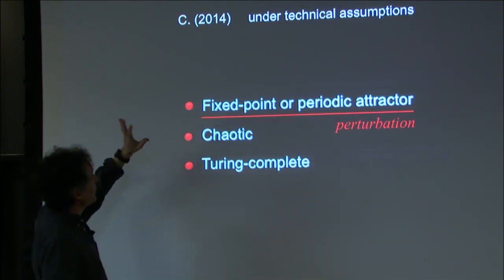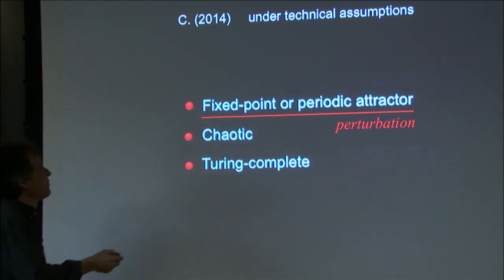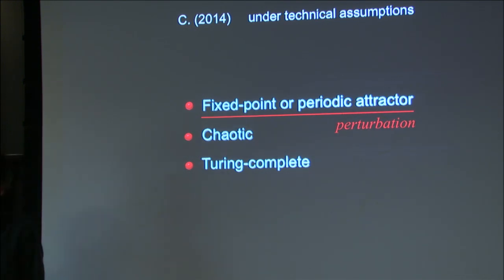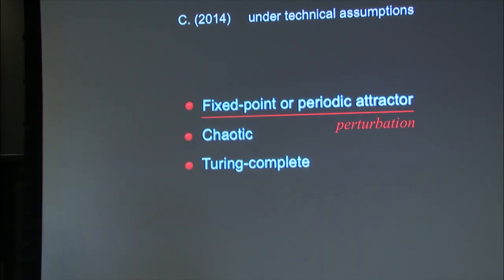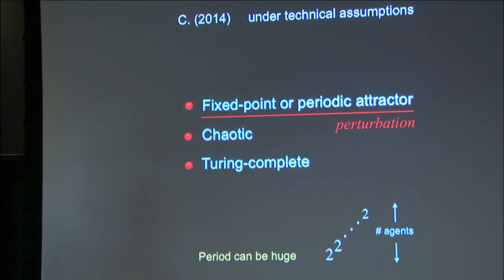Under some technical assumptions, if you perturb the system, then with probability one you will have a periodic attractor — you will have limit cycles. This is a smooth analysis. The key is the choice of transfer of cycles. Even when it's like this, you can have — and this is the biggest difference with Markov chains — multiple timescales.